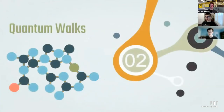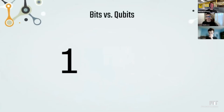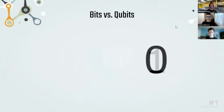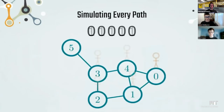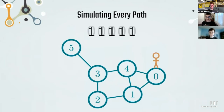In a quantum walk, instead of walking in a random direction, we're walking in every direction — taking every path possible at once. But in order to extract any meaningful data out of that, we have to measure it. Measuring it chooses one path to show us. To get around this, we measure it a bunch of times in order to get a sense of where the walker is traveling on the graph.